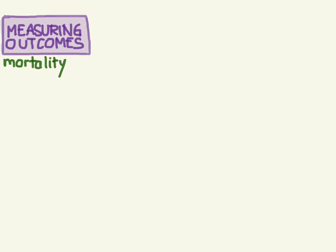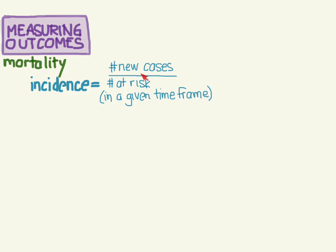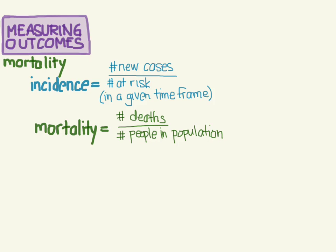We're going to continue with measuring outcomes and talk about the most permanent outcome of all: mortality. Mortality can really be thought of as a special kind of incidence. Incidence is measured as the number of new cases over the number of people at risk in a given time frame. Mortality is the same thing, except the cases are deaths. All deaths are going to be new since you can't die twice. So we write mortality as the number of deaths — the new cases — over everyone in the population, who is at risk of dying.